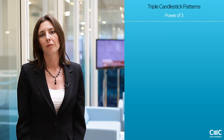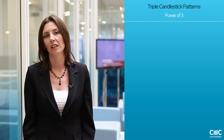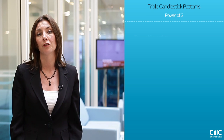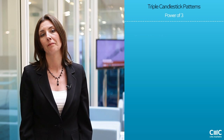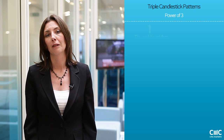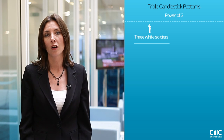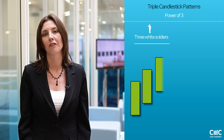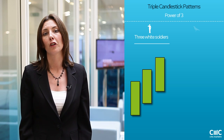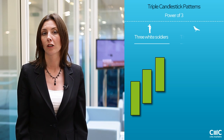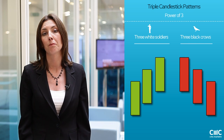In pre-modern Japan the number three had very mystical properties. As a result you'll find a lot of patterns are based on the number three. For example, three white soldiers — three long candlestick patterns one after the other — is quite a bullish move. Then you've got your three black crows, which conversely will be seen as a very bearish move.